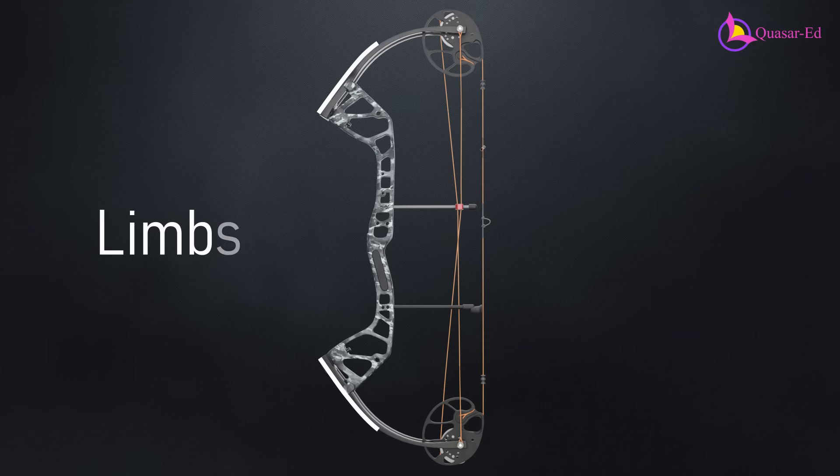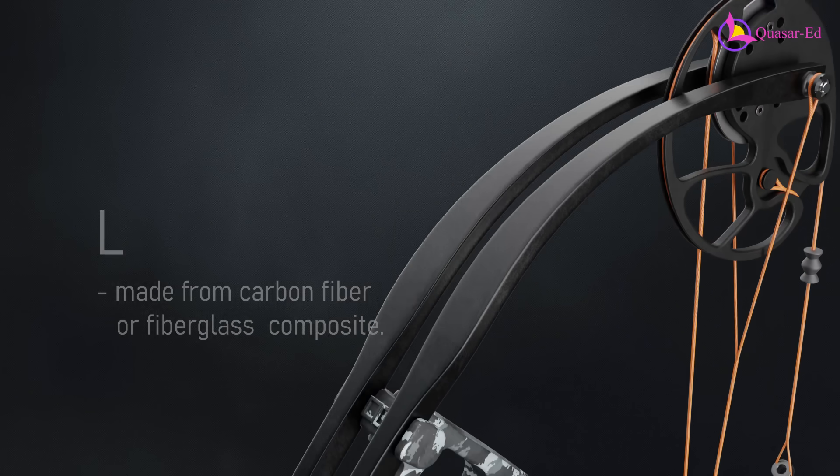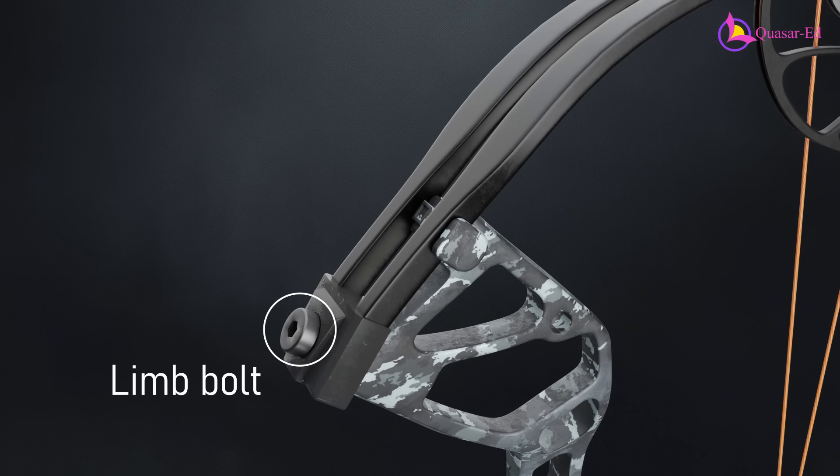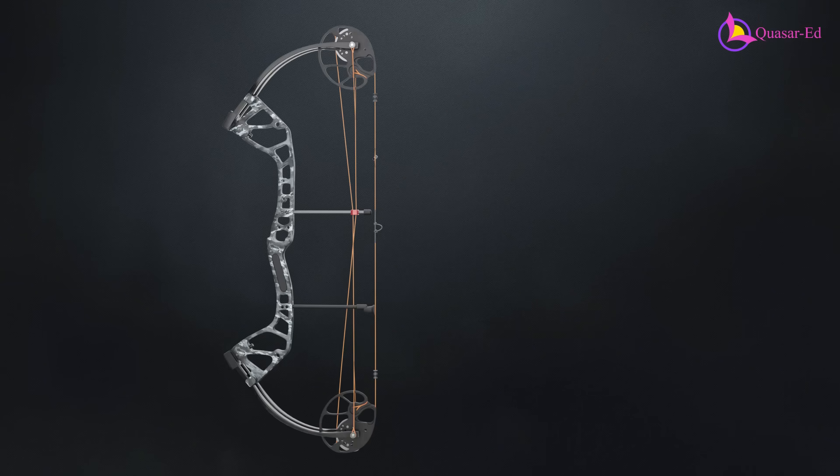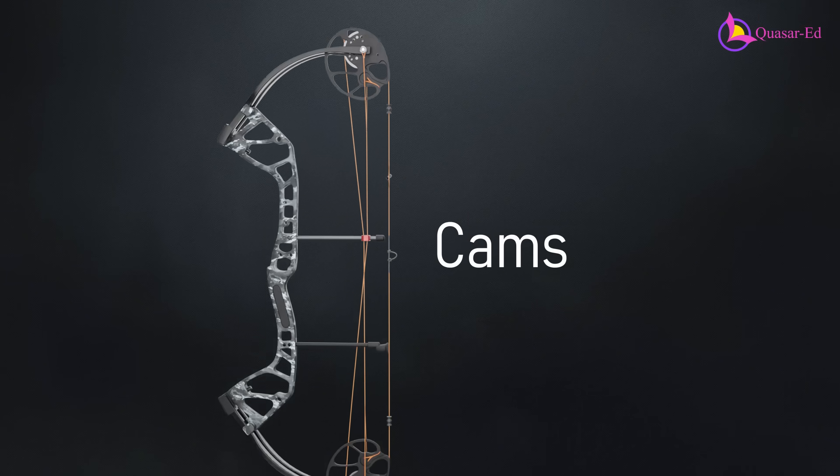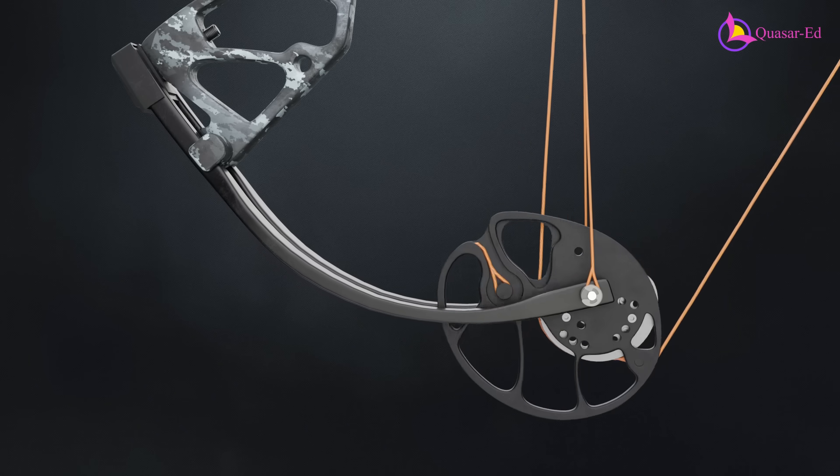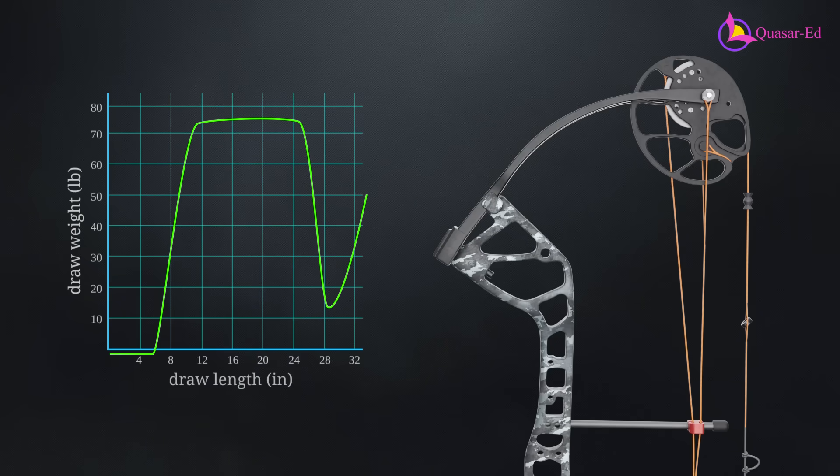Attached to the riser are the limbs, made from carbon fiber or fiberglass composites. These limbs fit into limb pockets and are secured by limb bolts, which can be adjusted to modify the bow's draw weight. At the end of each limb, there are cams, which are oval-shaped pulleys made of machined aluminum. These cams control the bow's power and let-off, making them a crucial part of the compound bow's unique performance.